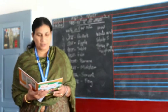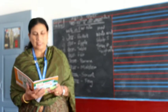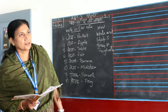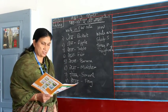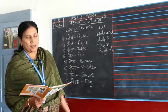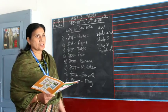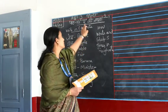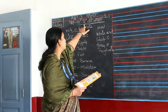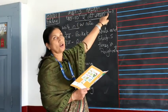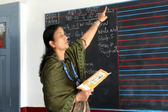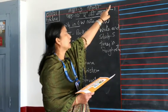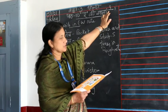Good morning children. Today I'll be taking Hindi class for the third standard. This is part number 10. Children, it is 'e ki matra.' 'E ki matra' — 'e' is written like this, with a small hook line on the top. This is 'e ki matra.'